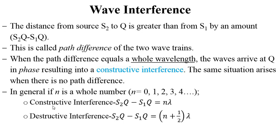In short, when we talk about constructive interference, this path difference results into a whole number of the wavelength. But when we talk about destructive interference, then we have a fraction concept or the fraction part of the wavelength.